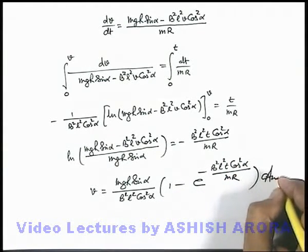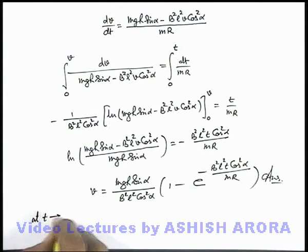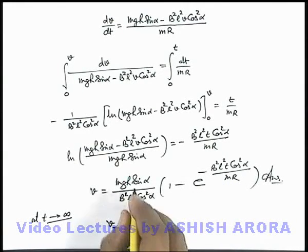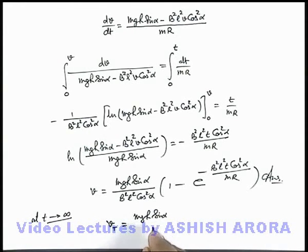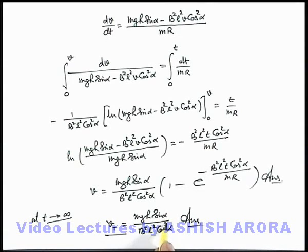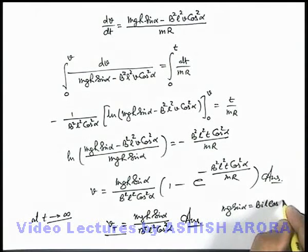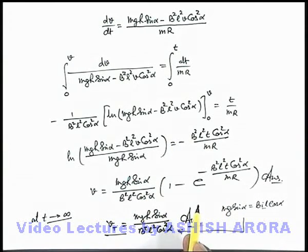This is the final answer. At t tending to infinity, the terminal speed of the rod is v_terminal = mgR·sin(α) / (B²L²·cos²(α)). This terminal speed can also be directly obtained when the total force on the sliding rod is zero, i.e., when mg·sin(α) is balanced by BiL·cos(α). Substituting the value of current directly gives this relation without simplifying the full expression.